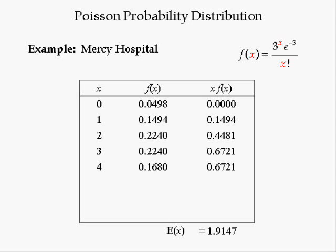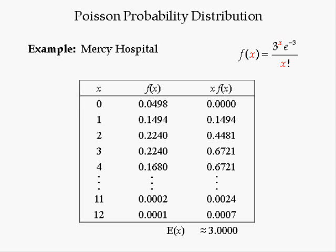Because a Poisson random variable can take on infinite numbers starting at 0 and increasing by 1, we need to add more values of X in the table. Plugging 11 into the Poisson distribution function yields f(11) equal to 0.0002; multiplying by 11 equals 0.0024. Plugging x equal to 12 gives f(12) equal to 0.0001; multiplying by 12 gives 0.0007. Summing up yields an expected value approximately equal to 3. The sum will never exactly equal 3 because x takes on infinitely many values — it just gets really, really close to 3.